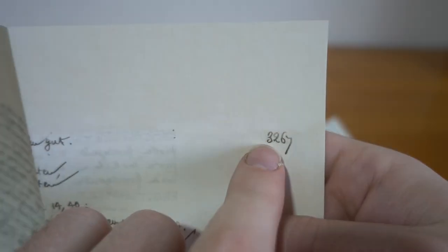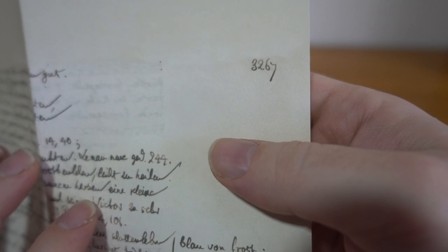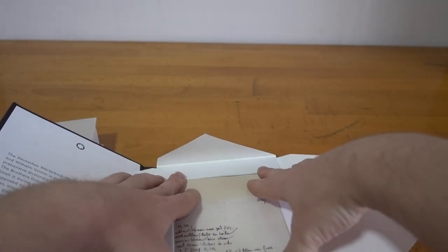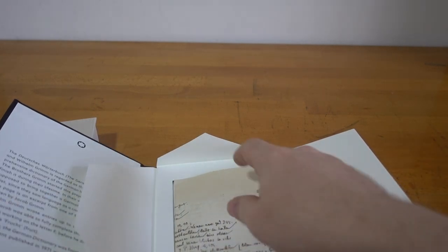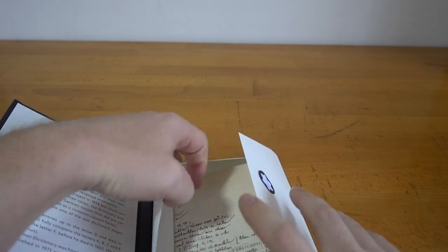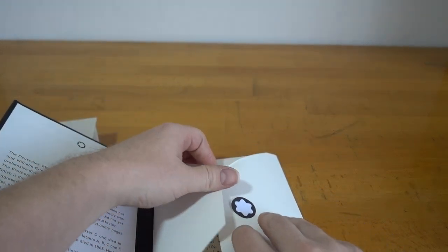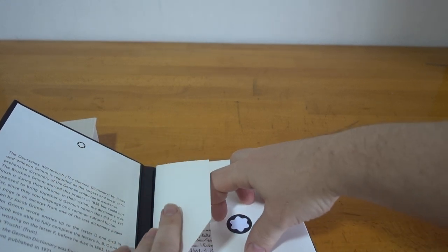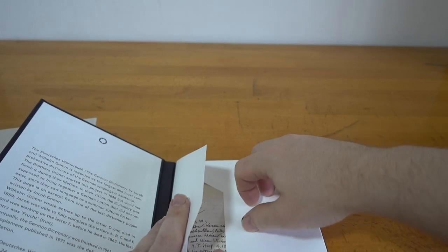But page numbers, well they got to 3,267 pages. I think the work to map or to complete their dictionary ended in the 1960s, so it took well over 200, 250 years to complete. Tenacious.